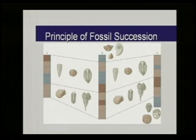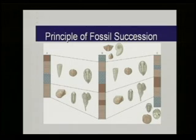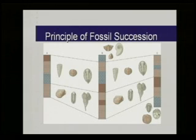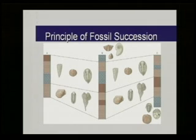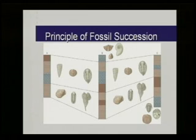Using the principle of fossil succession, we can look at different fossils and correlate rock layers from one place to another. The bottom layer contains a crinoid and a trilobite; above it is a younger layer with a different species of trilobite, a rugose coral, and a brachiopod. The grouping of fossils — the fossil assemblages — allows us to trace rock layers from one place to another in a regular succession. That trilobite found in the lower rock sequence went extinct and is no longer found in the upper layers.